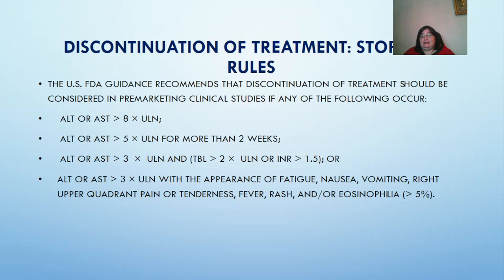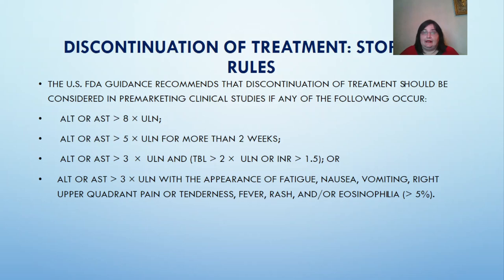Discontinuation of treatment — stopping rules. The United States FDA guidance recommends that discontinuation of treatment should be considered in pre-marketing clinical studies if any of the following occur: ALT or AST more than 8 times the upper limit of normal; ALT or AST more than 5 times the upper limit of normal for more than 2 weeks; ALT or AST more than 3 times the upper limit of normal with INR more than 1.5; or ALT or AST more than 3 times the upper limit of normal with the appearance of fatigue, nausea, vomiting, right upper quadrant pain or tenderness, fever, rash, or eosinophilia greater than 5%.